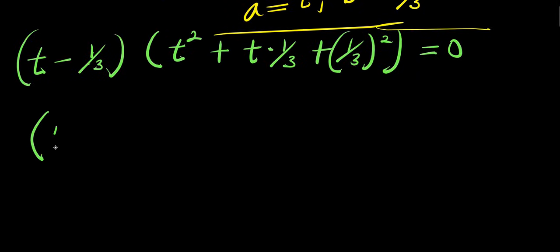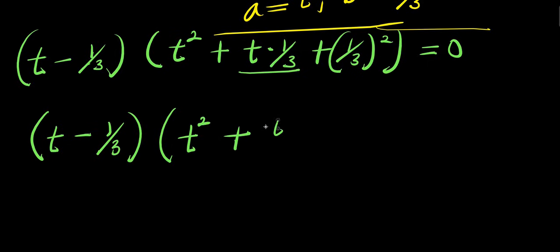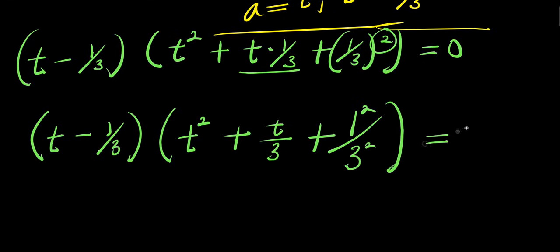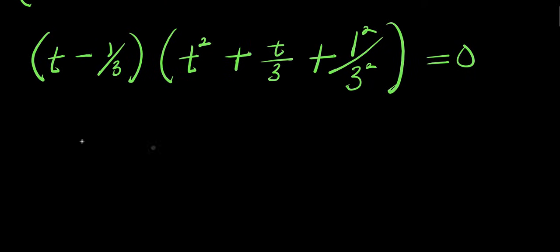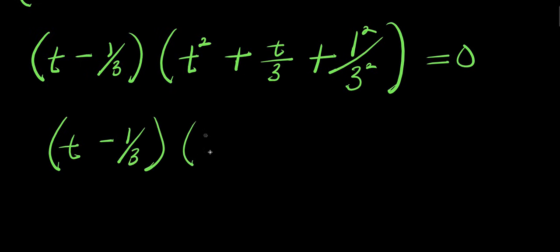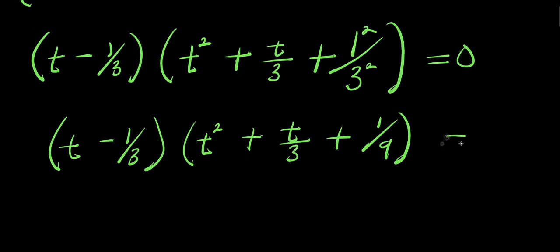So from here we have t minus 1 over 3, times t squared plus t divided by 3 plus — we distribute this to each of the terms here — that is 1 to the power 2 divided by 3 to the power 2, this equals 0. So we have t minus 1 over 3, times t squared plus t divided by 3 plus 1 over 9, equals 0.